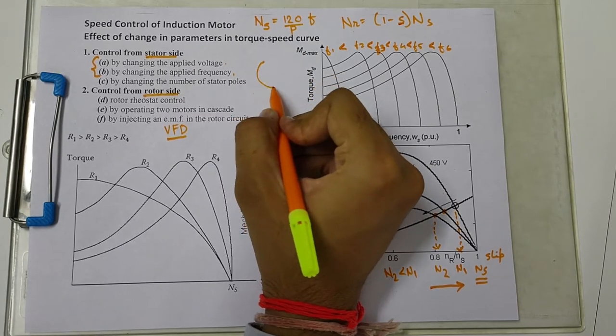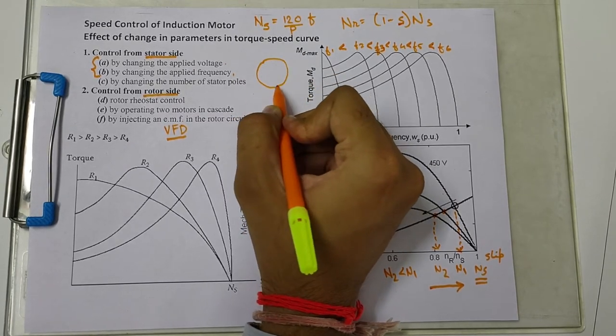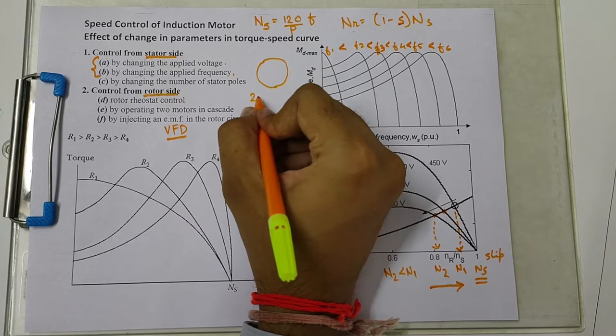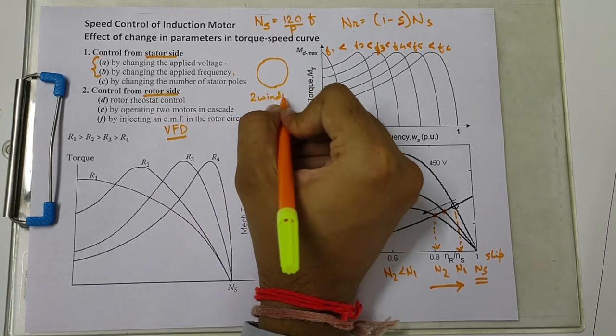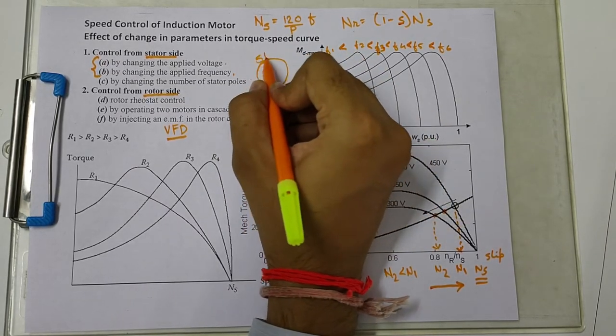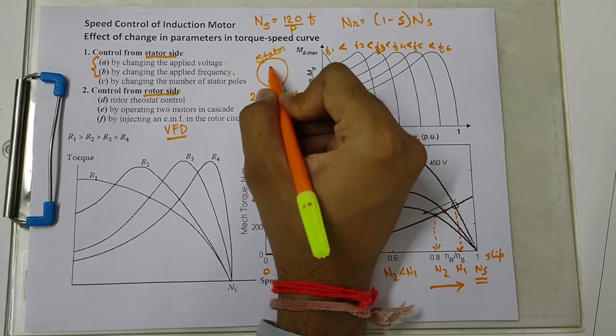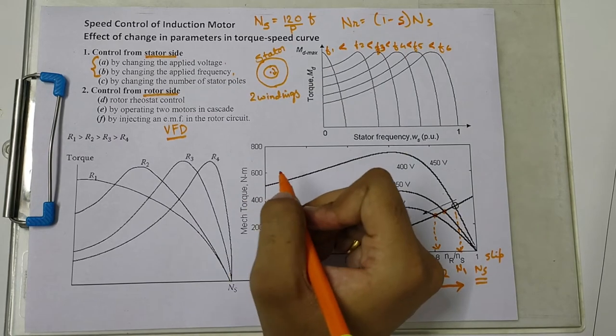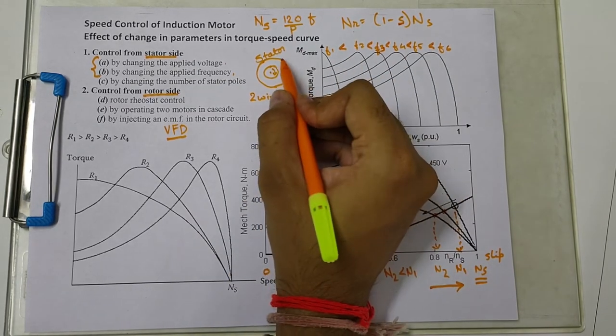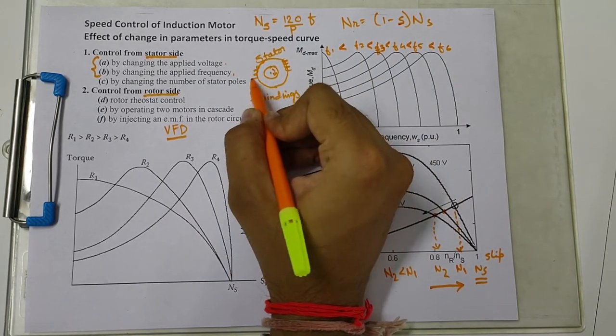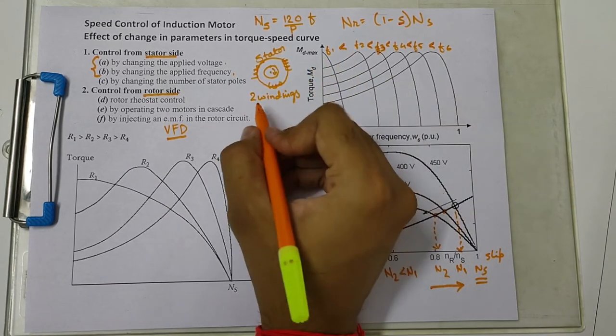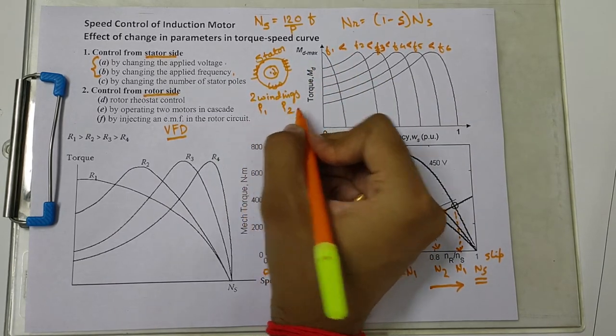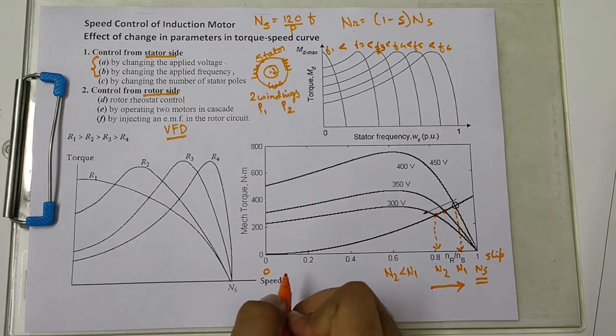So if we have two separate windings on the stator of the induction motor, then we can have such windings that both will have different numbers of poles.